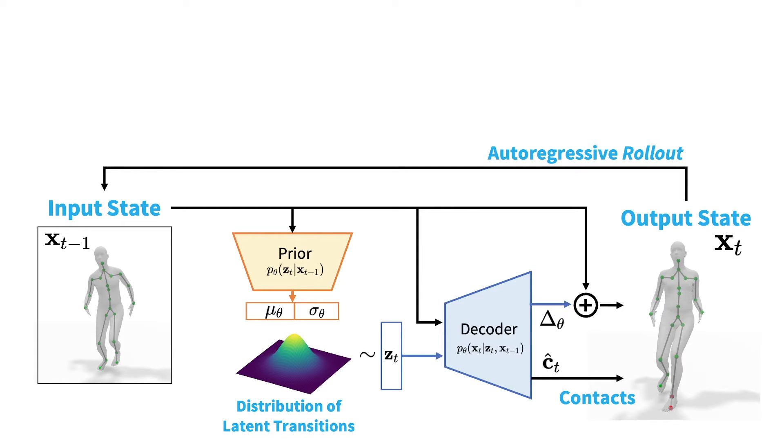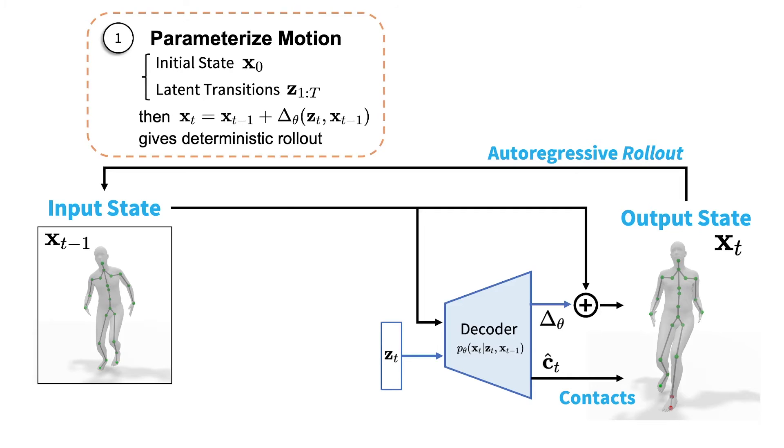We propose to use Humor in two key ways to encourage plausibility during optimization. First, instead of directly optimizing simple parameters, we use Humor to parameterize the motion. This is done through an initial state and a sequence of latent transitions.